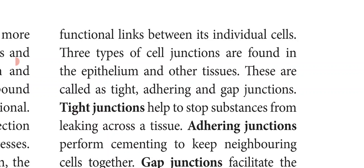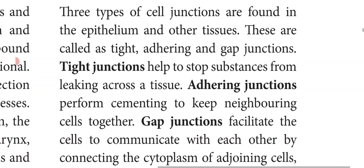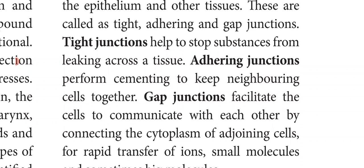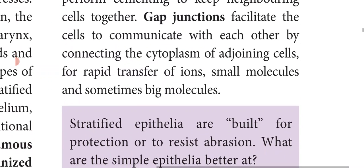Tight junctions help to stop substances from leaking across a tissue. Adhering junctions perform cementing to keep neighboring cells together — adhering means like a paste keeping neighboring cells together. Gap junctions facilitate cells to communicate with each other by connecting the cytoplasm of adjoining cells for rapid transfer of ions, small molecules and sometimes larger molecules.